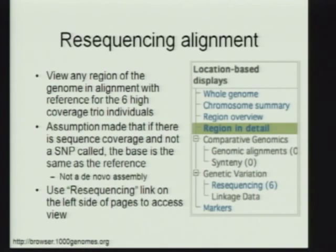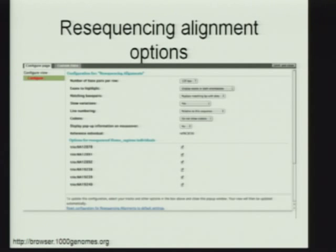I alluded to earlier this concept of resequencing alignment that we provide for the six high-coverage trios. What this allows you to do is view any region of the reference genome with the SNPs from the six high-coverage individuals substituted in. This is not a de novo assembly of these individuals — it's a view of the reference genome with the SNPs from these high-coverage individuals substituted in. We also mark the areas where there's no coverage — that 15 percent of the genome that Gabor talked about that we can't see into. This is configured via the 'Configure This Page' link, allowing you to select which of the trio individuals you'd want to see. This is the only place we provide individual sequence data for samples in the project via the browser; everything else is either the entire trio track or the population tracks.